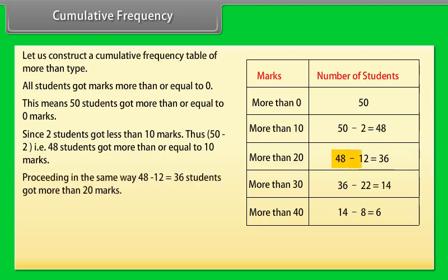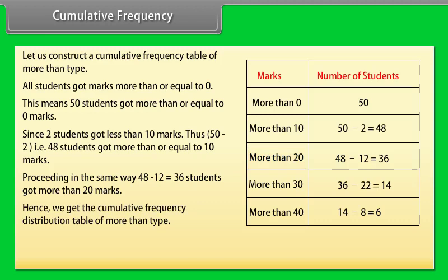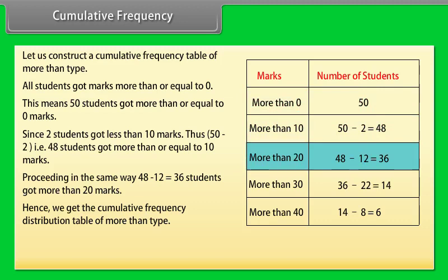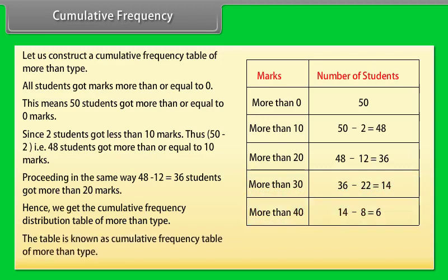Proceeding in the same way, 48 minus 12 equals 36 students got more than 20 marks. We get the cumulative frequency distribution table of more than type: more than 0 → 50; more than 10 → 50 − 2 = 48; more than 20 → 48 − 12 = 36; more than 30 → 36 − 22 = 14; more than 40 → 14 − 8 = 6. This table is known as the cumulative frequency table of more than type.